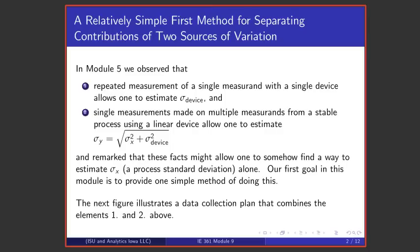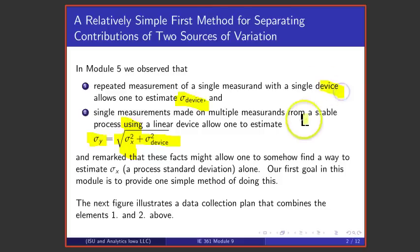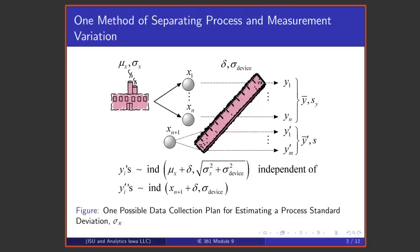Here's where we begin. If one makes repeated measurements of a single measurand with a single device, one sees variation that we've called sigma_device. On the other hand, if single measurements are made on multiple measurands from a stable process, what one sees in terms of variation is a standard deviation that is a combination of the process standard deviation and the measurement variation. If we can estimate sigma_y and sigma_device, we ought to be able to estimate sigma_x using data of these two kinds.